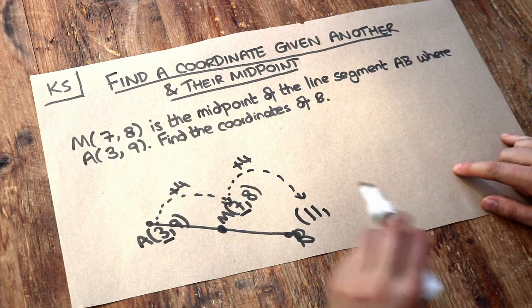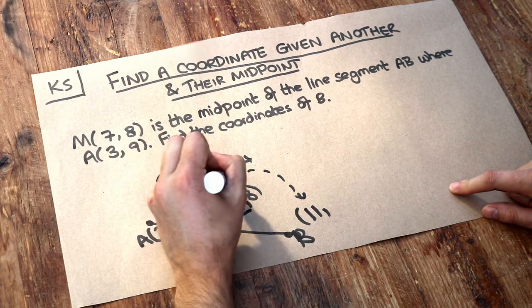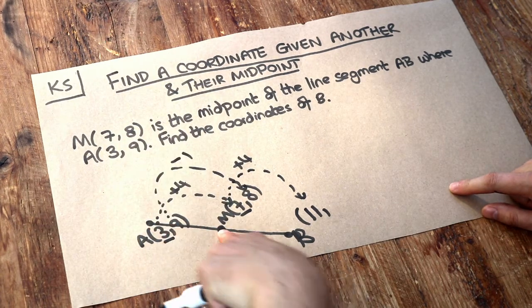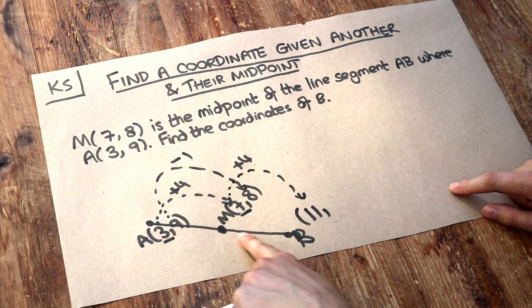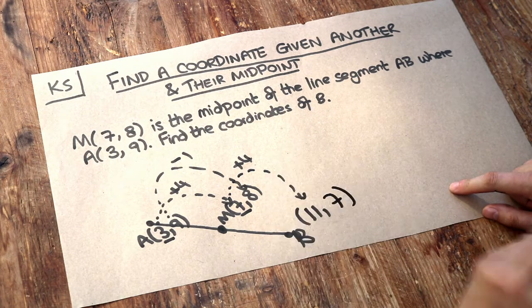Now we can do the same with the y values. Look, the y value here is 9. Then the y value went down by 1, so it went down by 1 to get here. Then we just need to go down by 1 again to get to B. So 8, if you subtract 1, is going to be 7.